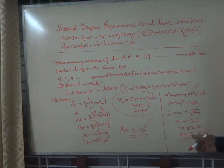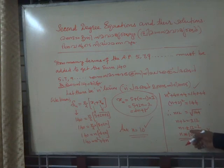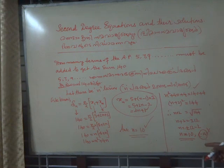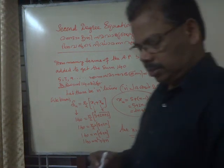12 minus 2 is 10, negative 12 minus 2 is negative 14, but n cannot be negative, number of terms cannot be negative. So the answer is 10. I think you got it.